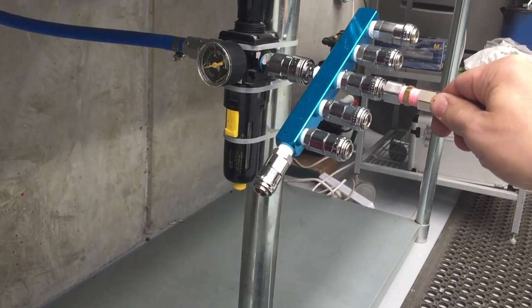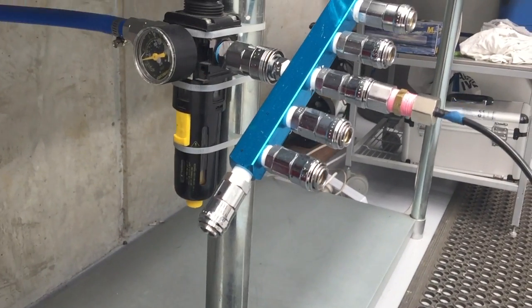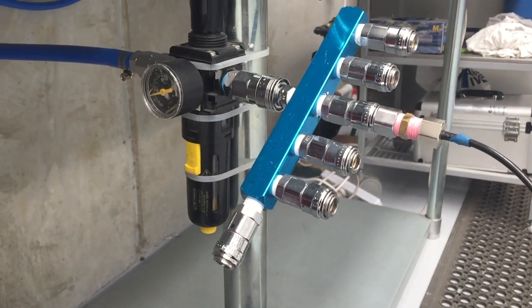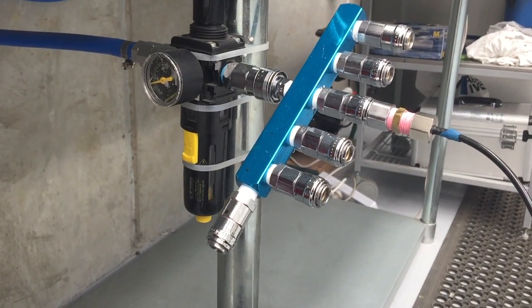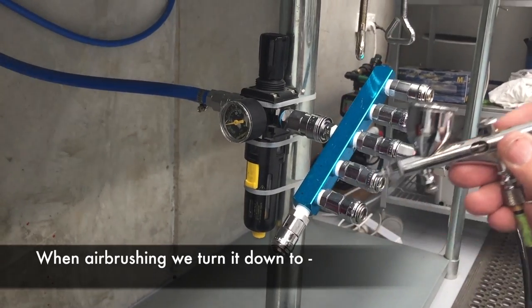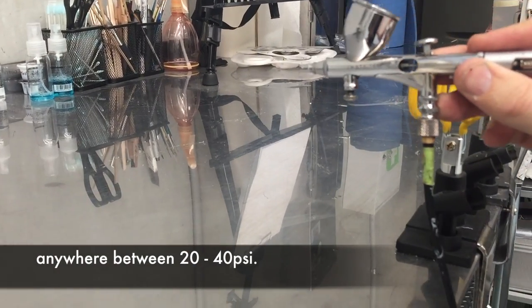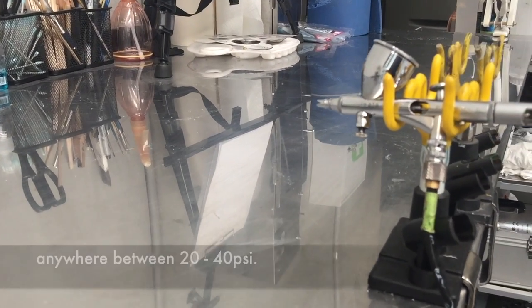But you can tell that everything runs back through from the main compressor right through the first filter which is the Amaxi one, then the moisture trap and then through another moisture trap before your airbrushing. So there's really a lot of steps to get there. So just to make sure that our air is clean as that's very important.